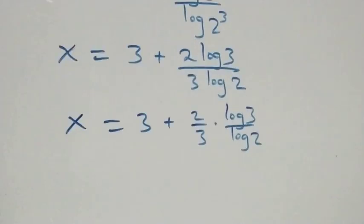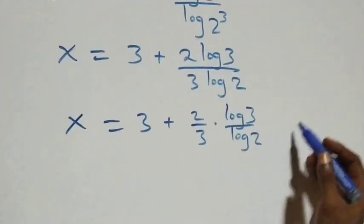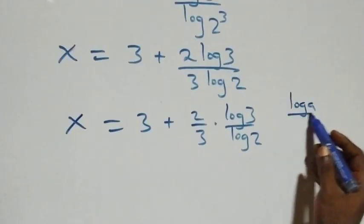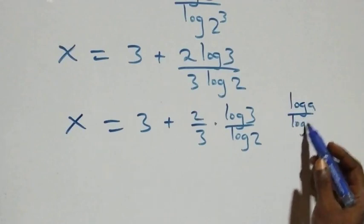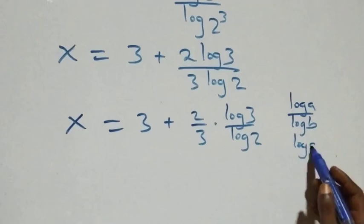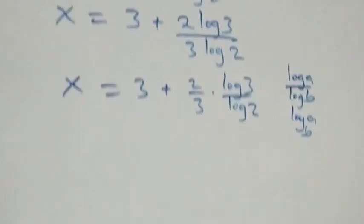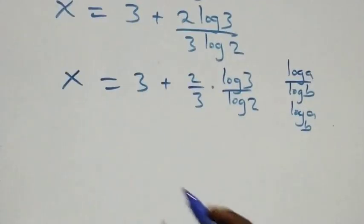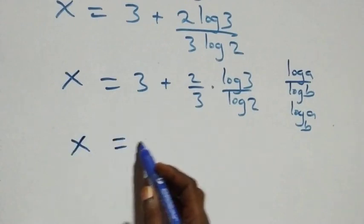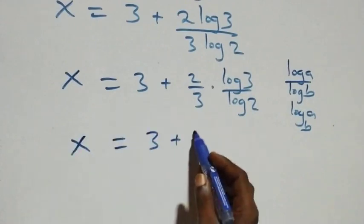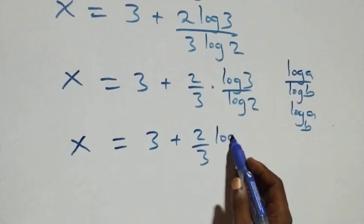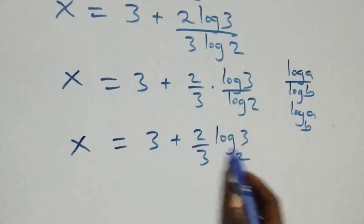Applying the change of base formula — log a over log b equals log base b of a — we get x equals 3 plus 2 over 3 times log base 2 of 3.